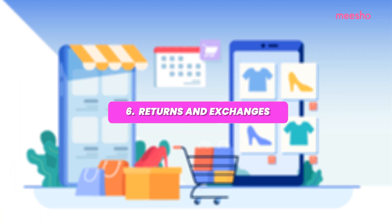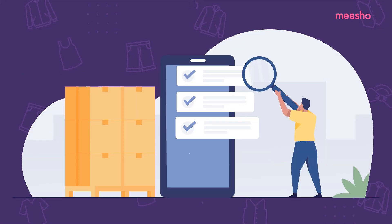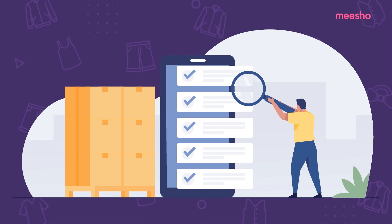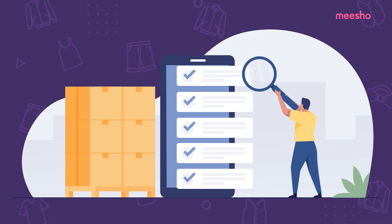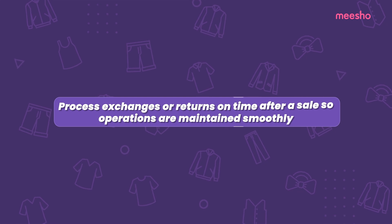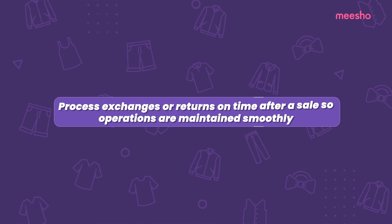Number six: returns and exchanges. Since orders increase by two to three times during a sale, it is possible that the total number of returns and exchanges after two weeks of a sale are also high. We recommend and request that you are ready to process exchanges or returns on time after a sale so operations are maintained smoothly.